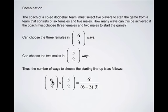Now, the combination of six choose three is six factorial over six minus three factorial times three factorial.